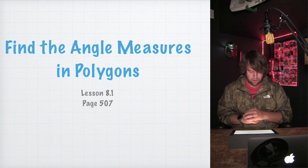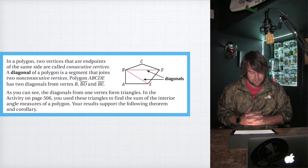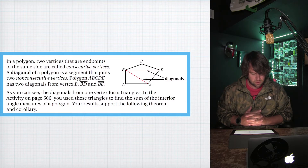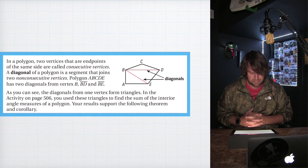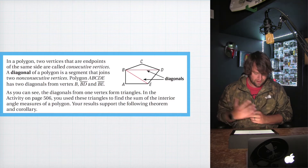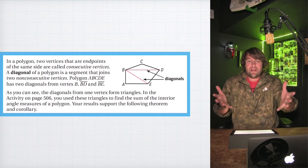All right guys, so today we're going to be learning how to find the angle measures in polygons — this is lesson 8.1, page 507. In a polygon, two vertices that are endpoints of the same side are called consecutive vertices. A diagonal of a polygon is a segment that joins two non-consecutive vertices. Polygon ABCDE has two diagonals from vertex B: BD and BE. You can see the diagonals from one vertex form triangles, which you use to find the sum of the interior angle measures of a polygon.